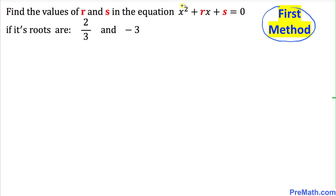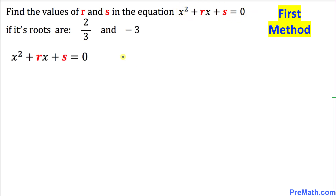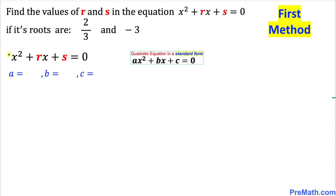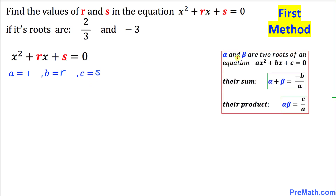Let's focus on this given quadratic equation, and I have copied it down right over here. Now we are going to compare this quadratic equation with a standard form. We can see that our a value is going to be 1, b value is going to be r, and c value is going to be s. Now let's look at our formula.